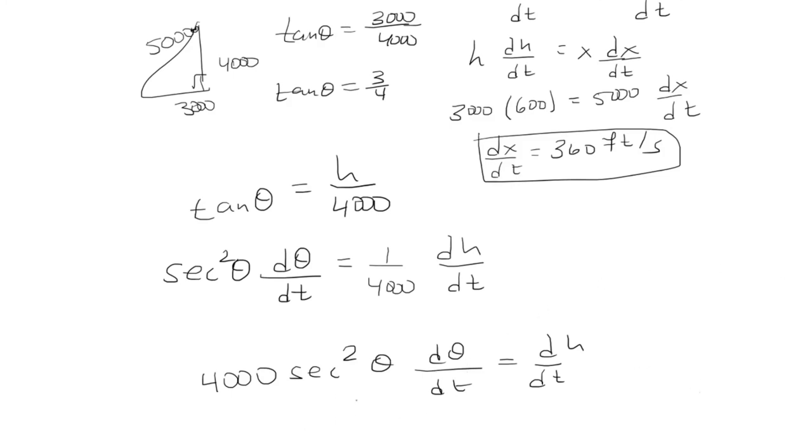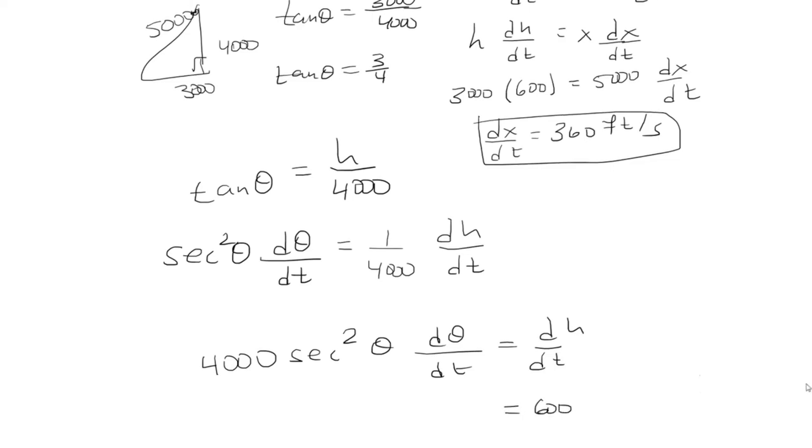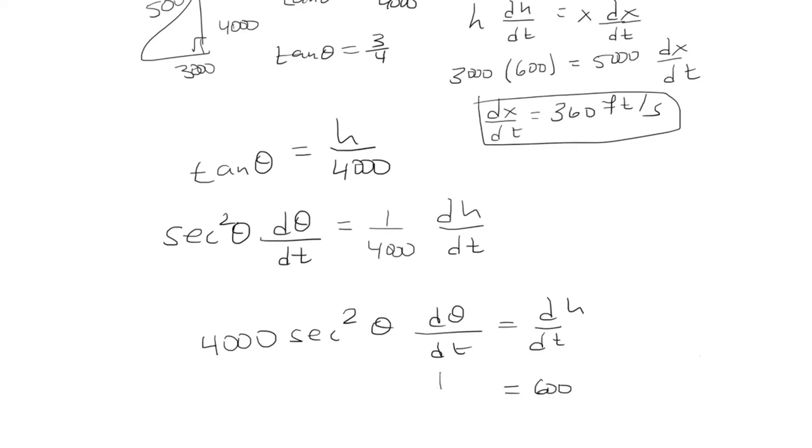Now we're going to plug in what we know. We know that dh/dt is 600. I want to find what d(theta)/dt is, and secant squared, well I know that tangent is opposite over adjacent, which we said was 3/4.